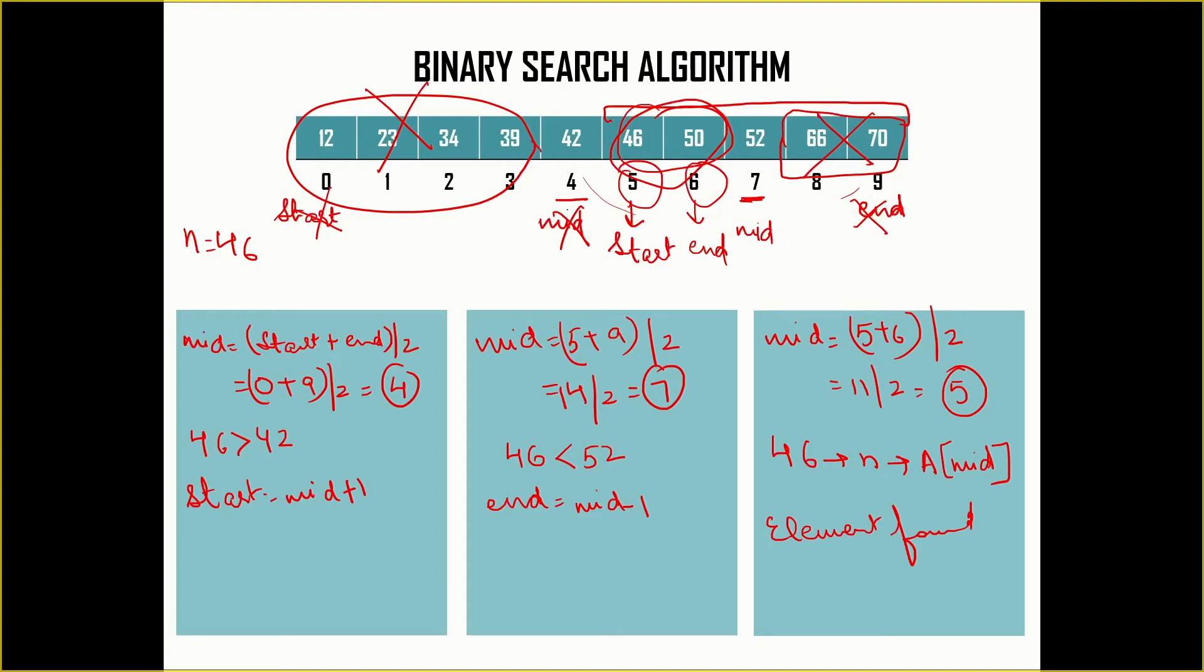If this was to be done linearly, then we would be performing this operation six times to search element 46.